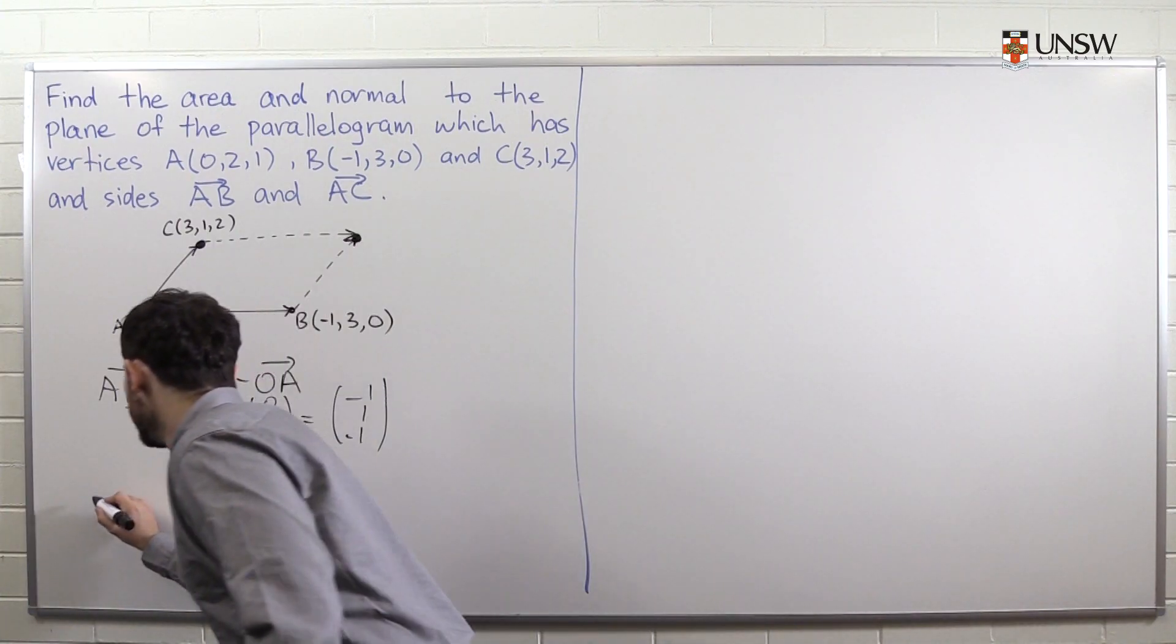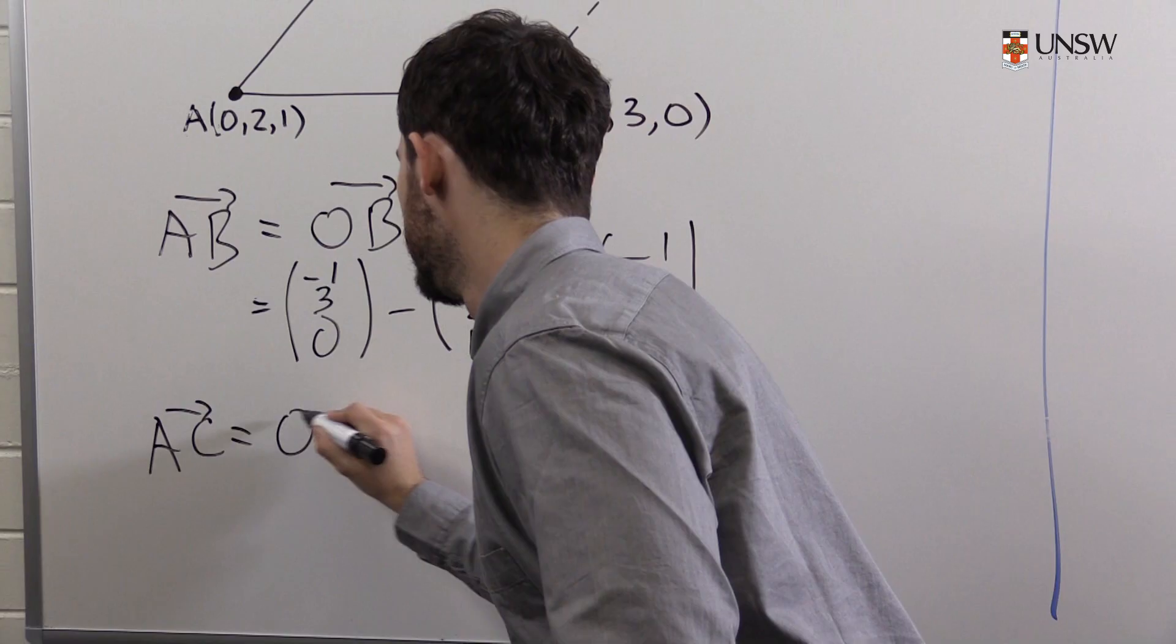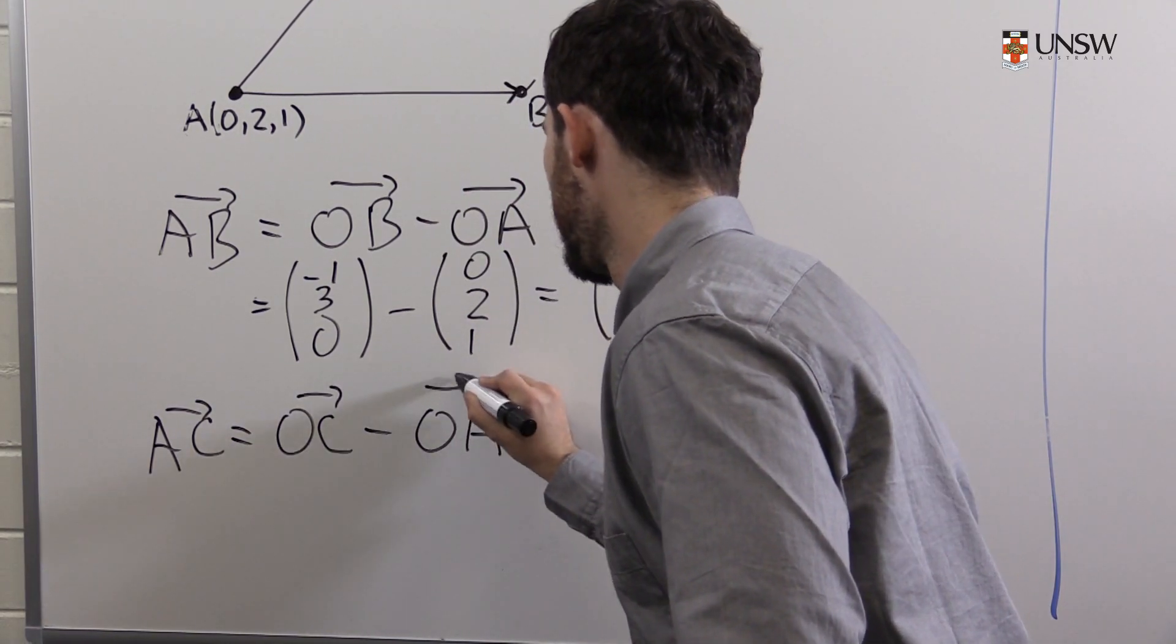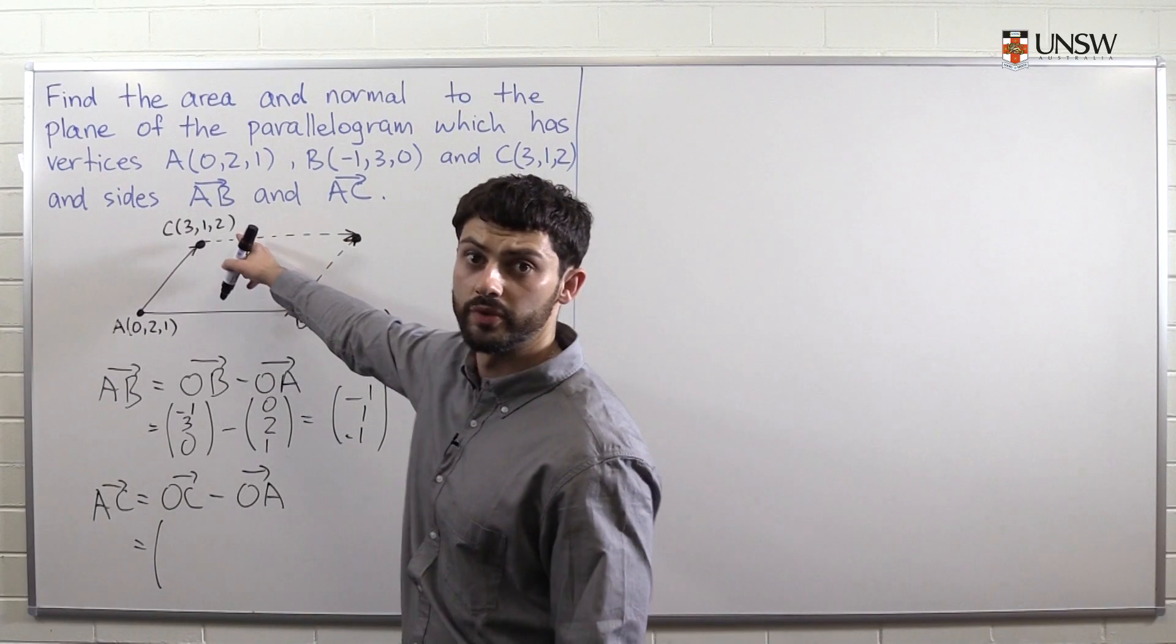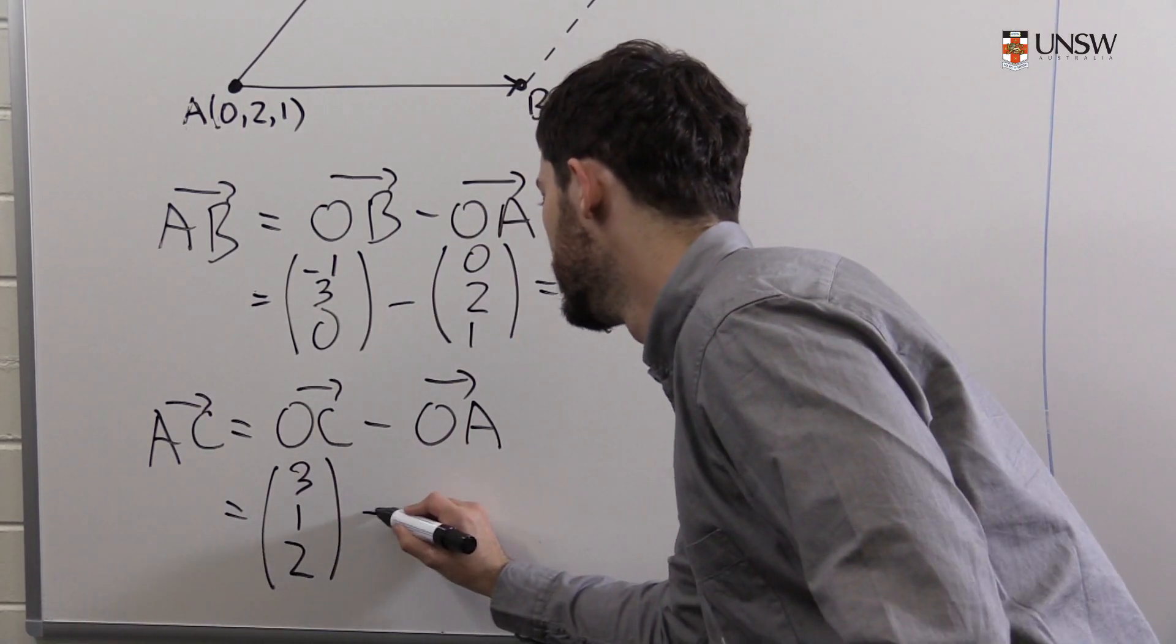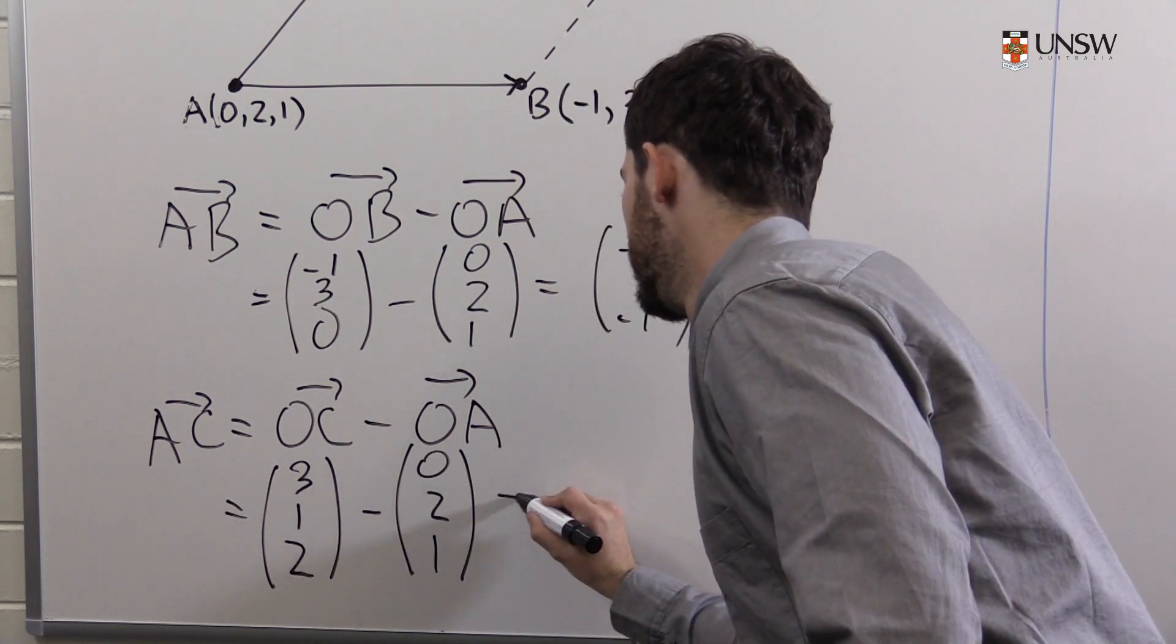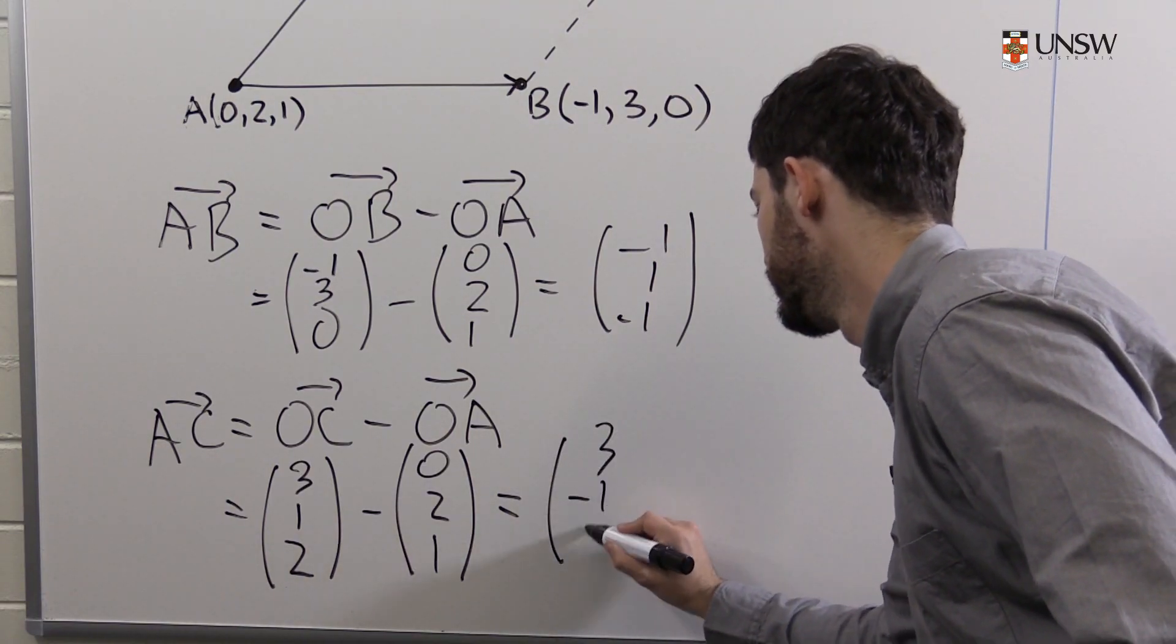And we find AC in a similar fashion. We write AC is OC minus OA. Again, OC is the coordinate vector of C. So we just write the coordinates of C as a column. So (3, 1, 2) minus the coordinates of A, which is (0, 2, 1). We subtract and we get (3, -1, 1).